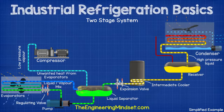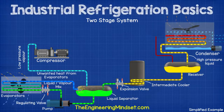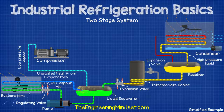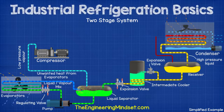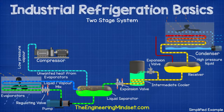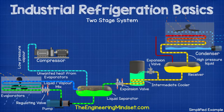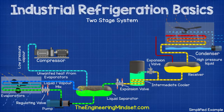It then continues its flow via the separator, the evaporator, and back to the separator. Another stream of refrigerant comes off the main line and is sprayed into the tank by an expansion valve to produce a cooling effect. As it is sprayed and evaporates into the tank, it cools the submerged coil, which sub-cools the main flow of refrigerant inside the coil before it flows to the main expansion valve.